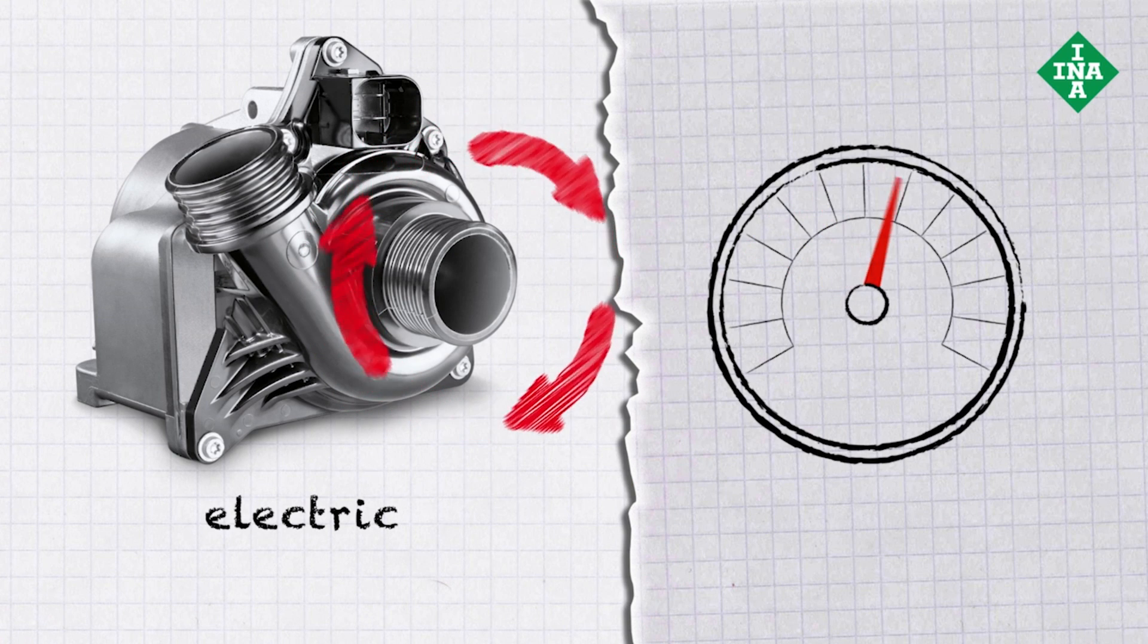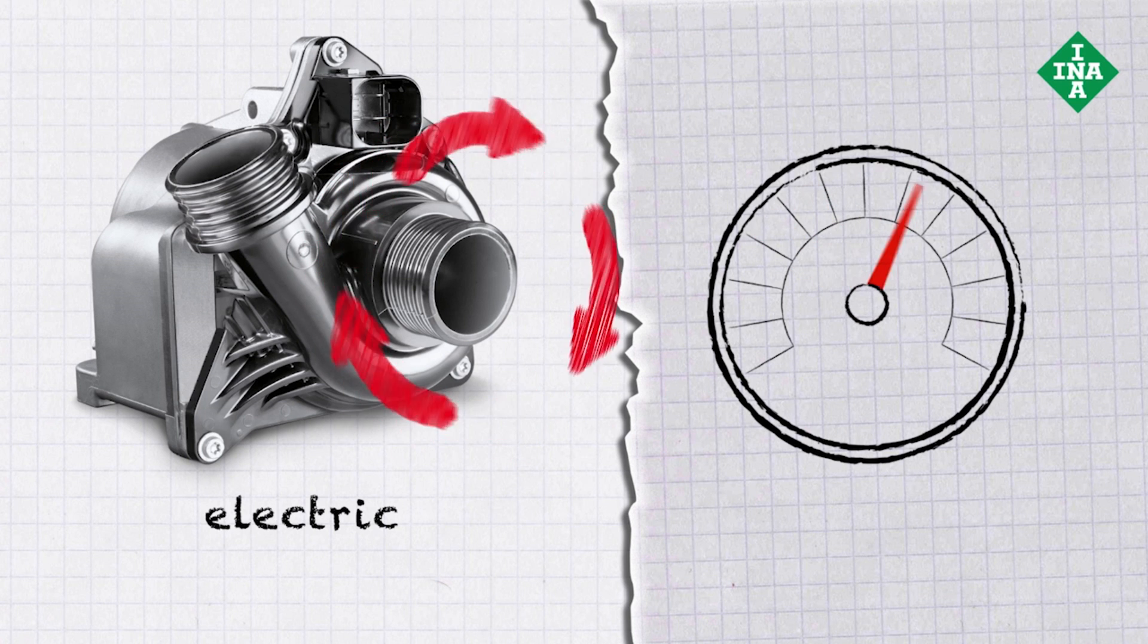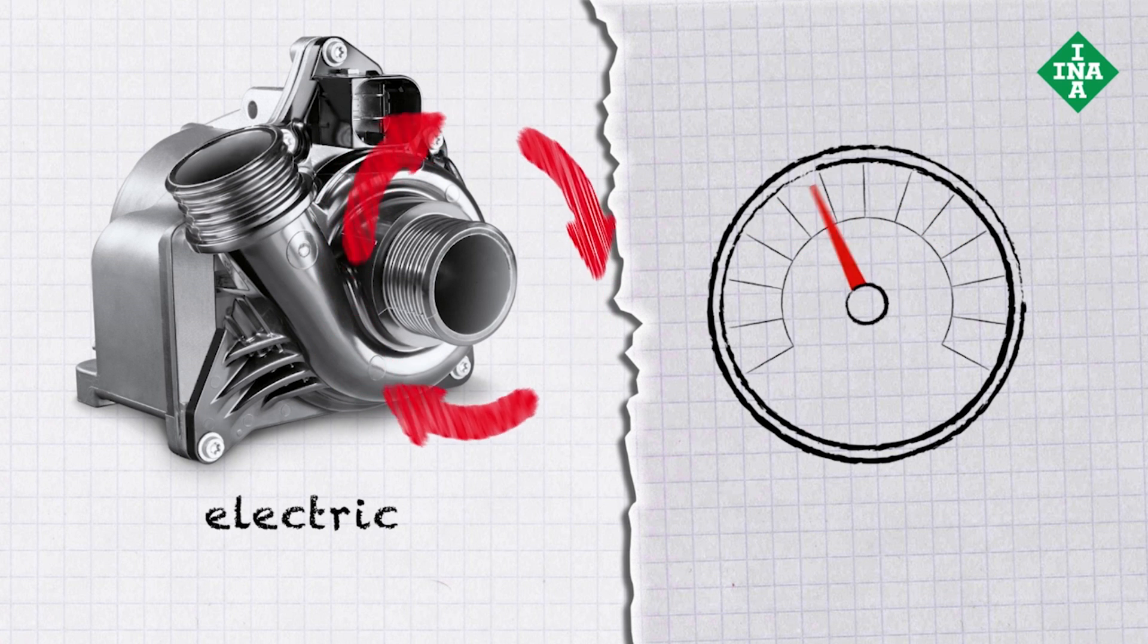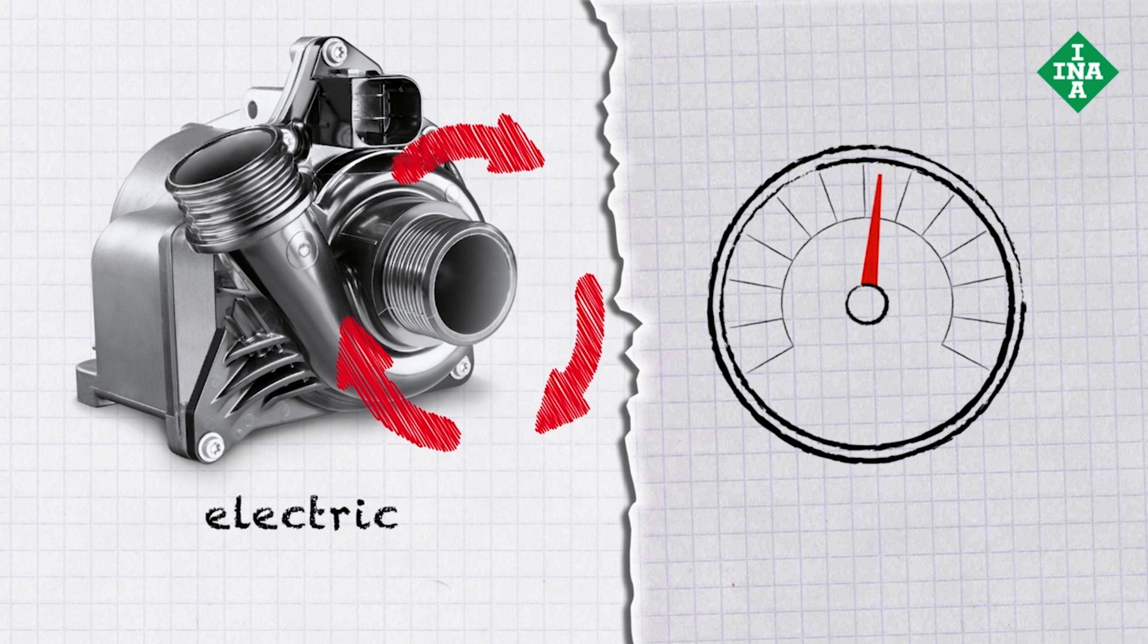Electric water pumps in contrast are completely independent from the engine speed, and an electric motor continuously regulates their individual performance.